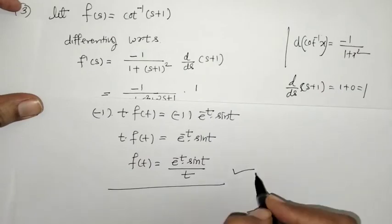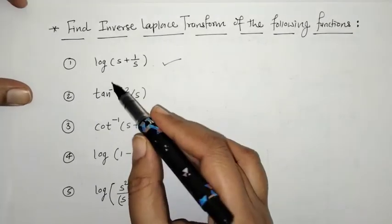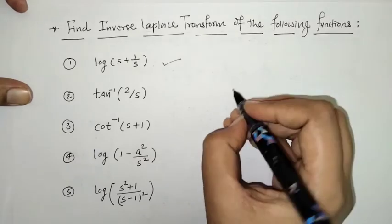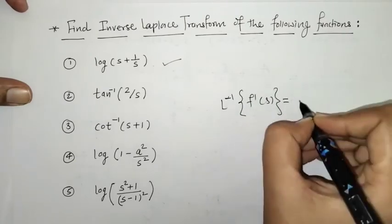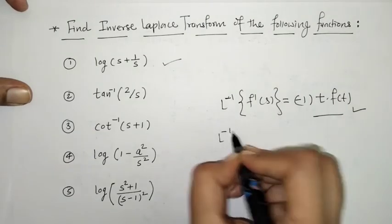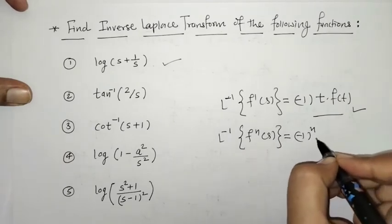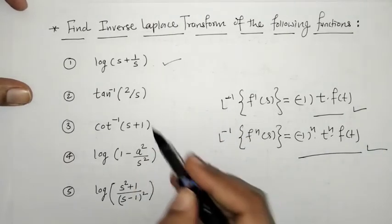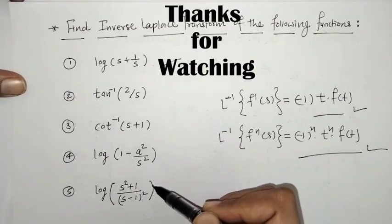In this way, we can solve all such examples. When given a special function like log, tan⁻¹, or cot⁻¹, first convert it to an algebraic form by taking its derivative, then use the property: L-inverse of F^(n)(s) = (−1)^n·t^n·f(t). By using these properties we can find inverse Laplace transforms of such functions. That's it for now — see you in the next video, keep watching.